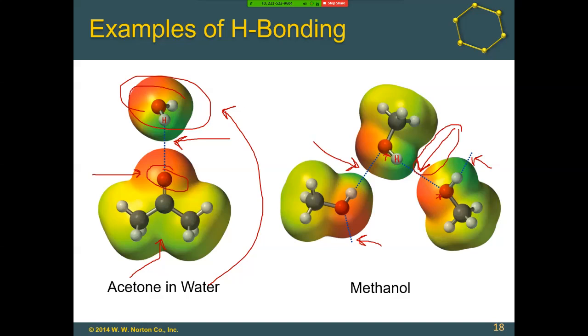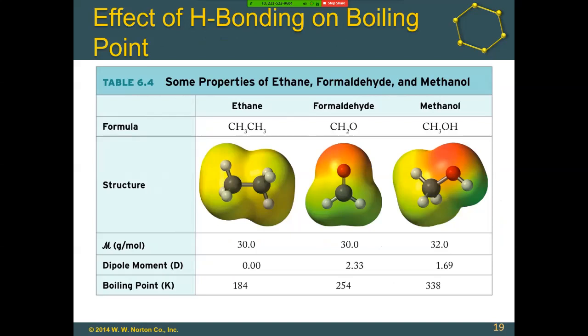If we take a look at a few molecules that are all about the same size — they all have about the same molar mass — similar molar masses give us a general idea of similar size. The big thing we see changing is that the dipole moment goes up from ethane to formaldehyde, and we would expect the boiling point to go up, and it does. We see the dipole moment go down between formaldehyde and methanol, but the boiling point still goes up. Why is that?